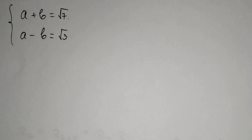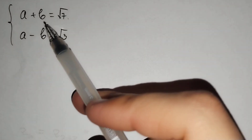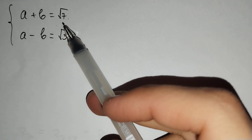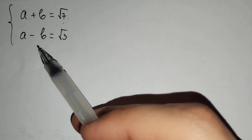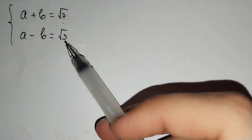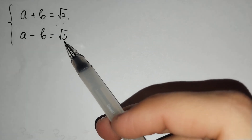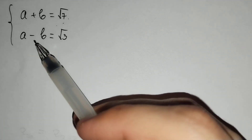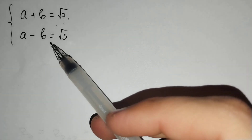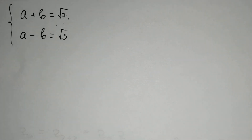Hi everyone. In this video we will solve this problem: a plus b equals 2 square root of 7, and a minus b equals 2 square root of 3. We should find a and b, and how should we solve this problem?